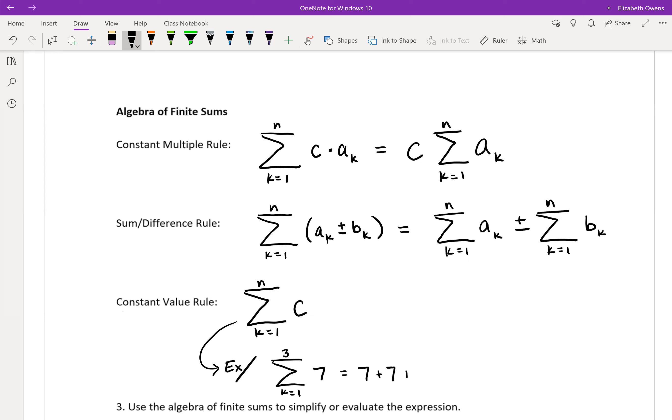And k equals 3 is our ending index there. So what that turns out to be is just you're adding together three of those 7s.